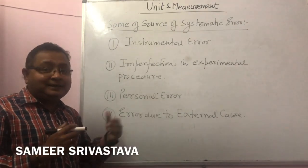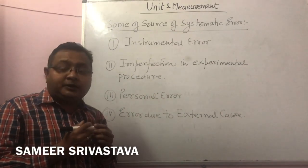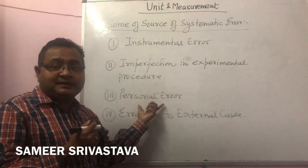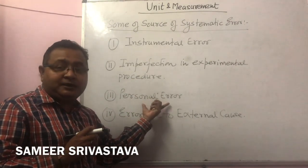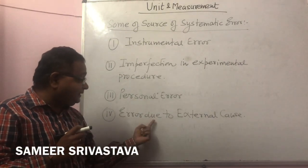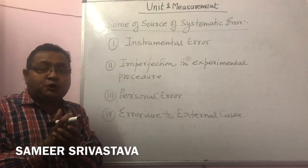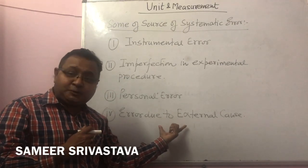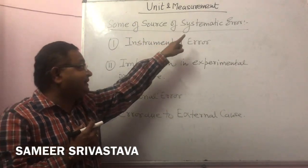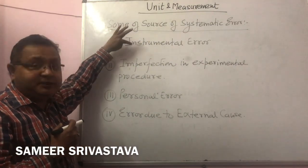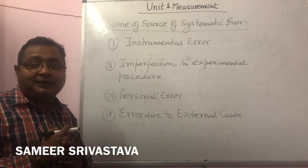The third is personal error — error generated due to the observer. If the observer takes a wrong reading during their experiment, that is called a personal error. The fourth and last is error due to external causes — such as temperature of the room or pressure of the room. Error which comes in our experiment due to these causes is called error due to external causes. So there are four sources which generate systematic error.